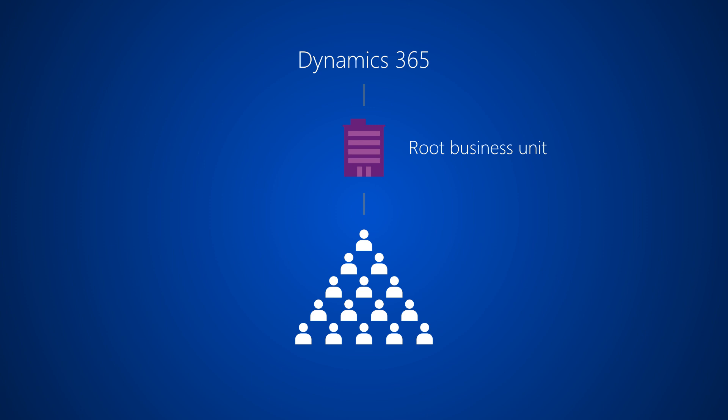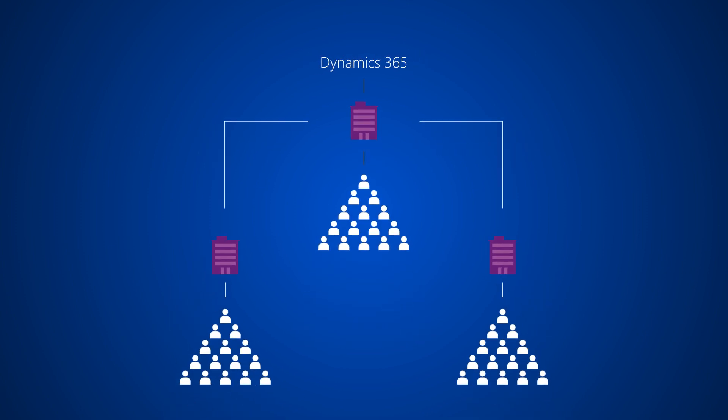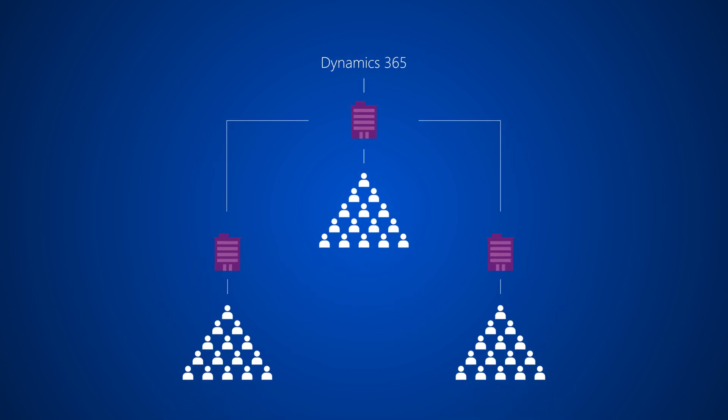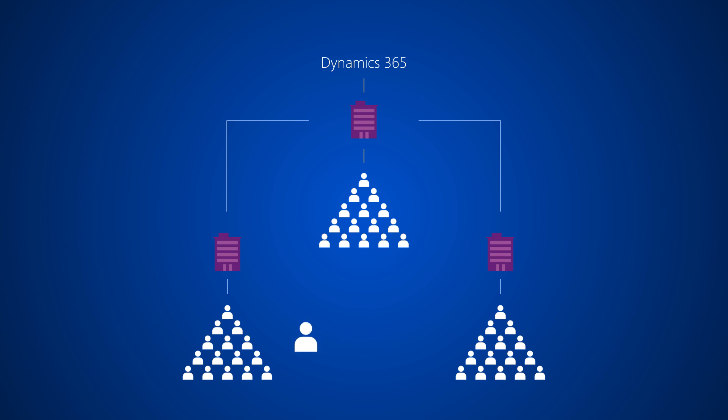In smaller organizations, this may be all you need. In larger organizations, you may create additional business units by function or geography. For the sake of simplicity, we recommend that you manage security using security roles and create only those business units that are necessary to meet your organization's security requirements. If you create additional business units, they will be children of the root business unit. You can add users and teams to either the root business unit or to the child business units.